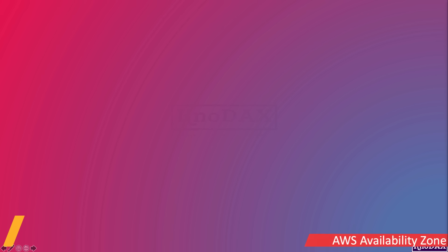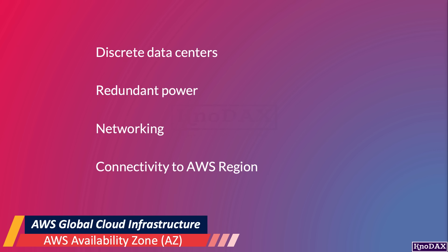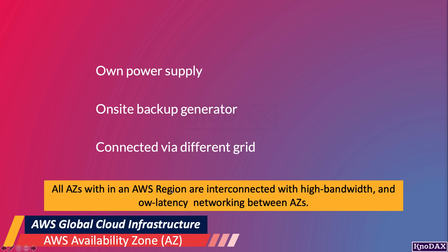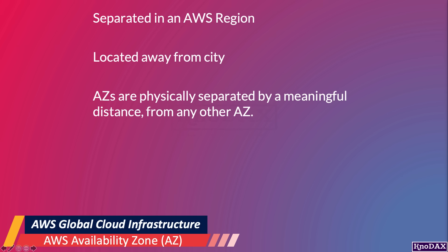Now you have a conceptual understanding of AWS Availability Zones. Let's go through it in more detail. An Availability Zone is one or more discrete data centers with redundant power, networking, and connectivity in an AWS region. Each Availability Zone has its own power supply and on-site backup generator, and they are connected via different grids from independent utilities, so as to avoid a single point of failure for any power outage. All AZs within an AWS region are interconnected with high bandwidth and low latency networking. Availability Zones are physically separated, located away from the city and in lower risk flood areas, and separated by many kilometers from any other Availability Zone.